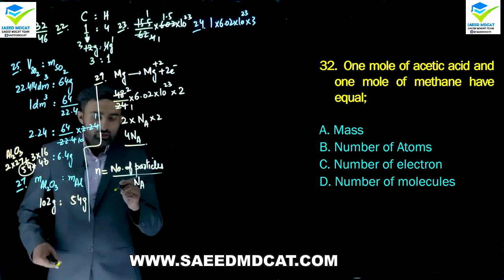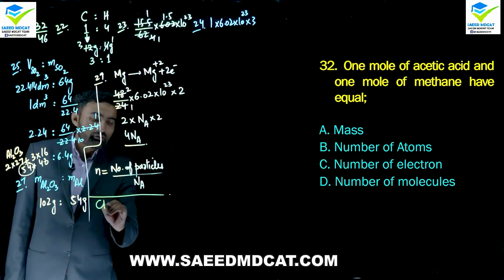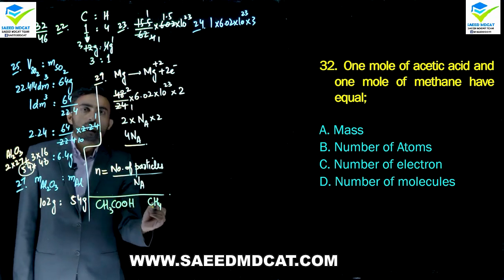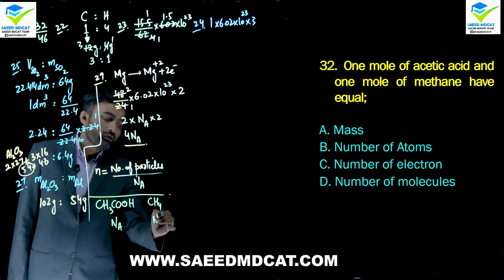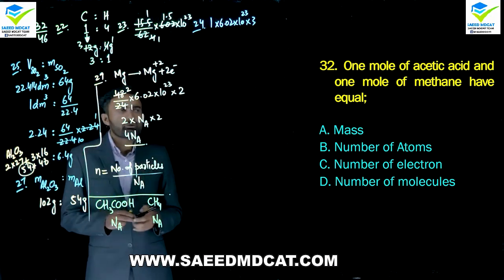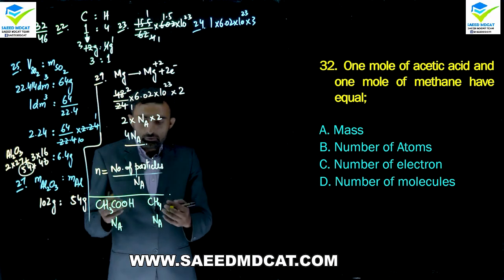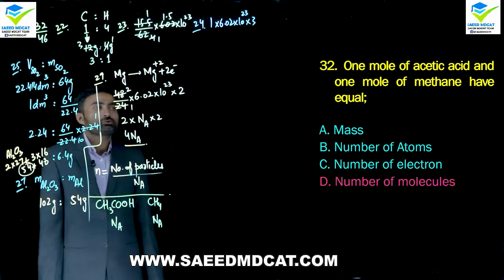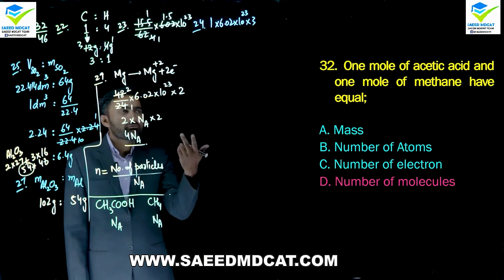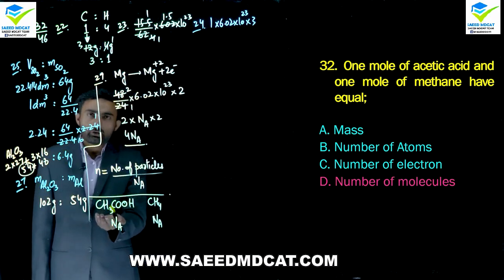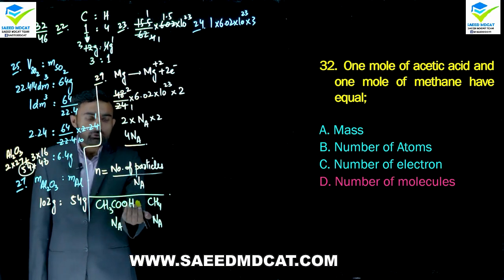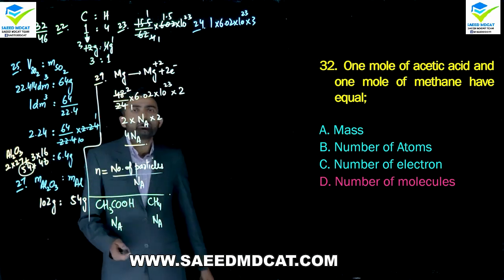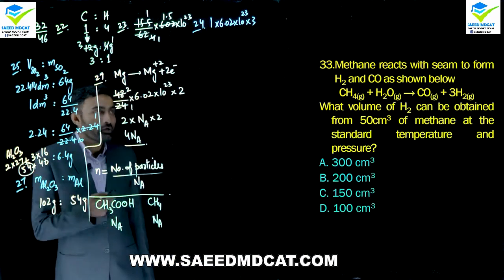Question 32: One mole of acetic acid (CH3COOH) and one mole of methane (CH4) have equal what? Both contain Avogadro's number of molecules. Masses, atoms, and electrons are all different between them. Only number of molecules is equal. Delta option is correct.